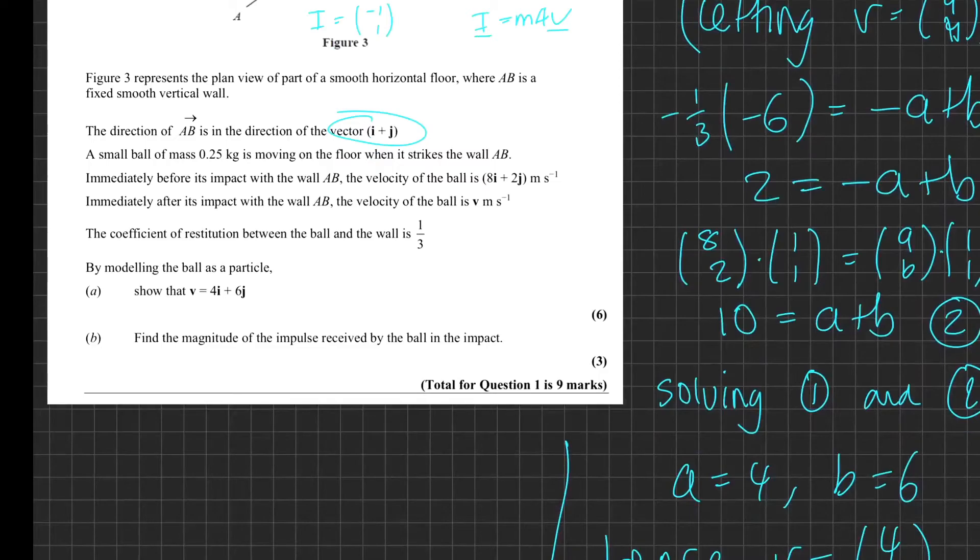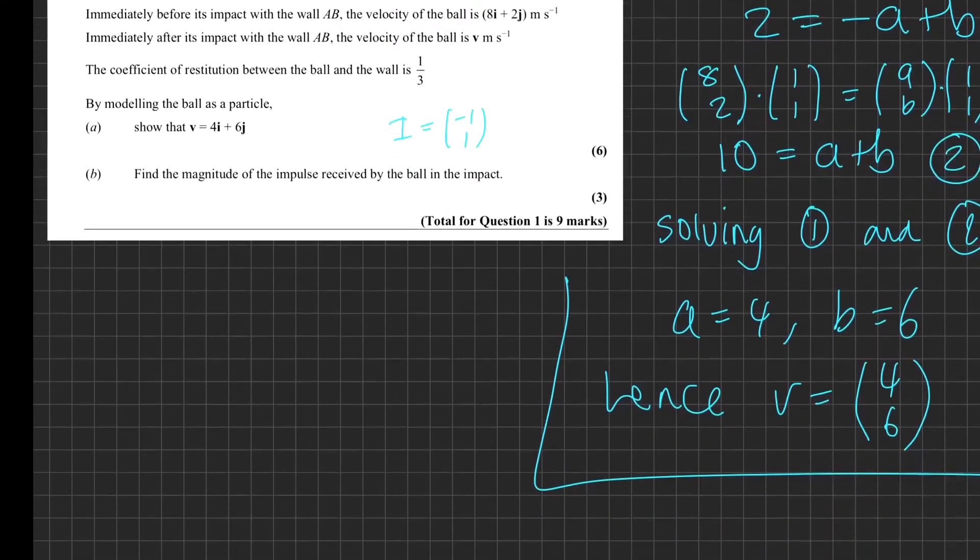Now let's have a look at the next bit: find the magnitude of the impulse received by the ball in the impact. So we know that our impulse is parallel to the vector (-1,1), but as I said earlier, our impulse isn't necessarily that exact vector. It could be, but it could be any scalar multiple of this vector as well. We need to double check that. We know the impulse is given by the mass times the change in velocity of the particle.